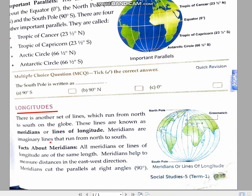Now meridians or longitudes are the imaginary lines which run from north to south on the earth. These are imaginary lines, no such line actually exists on the earth.